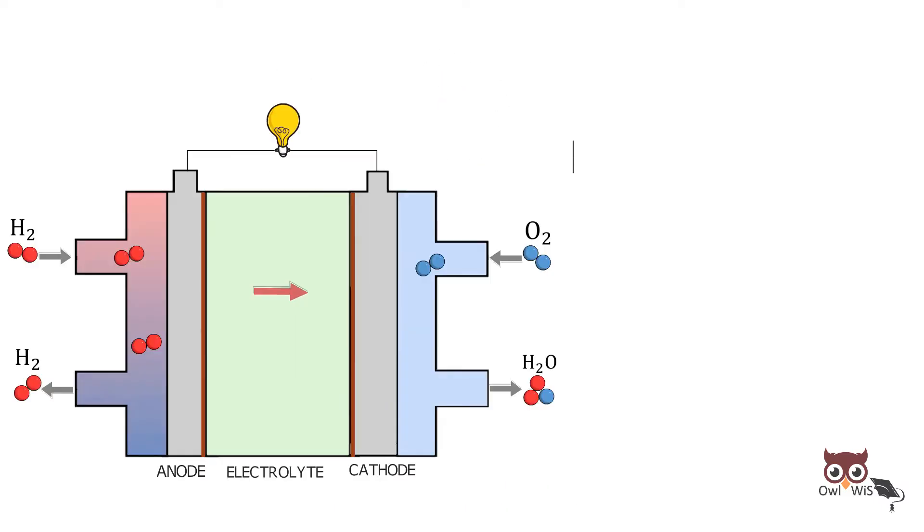The reactions are: at anode, hydrogen splits to form protons and electrons. At cathode, oxygen reacts with protons, accepts electrons to form water. The net reaction is hydrogen combines with oxygen to form water.